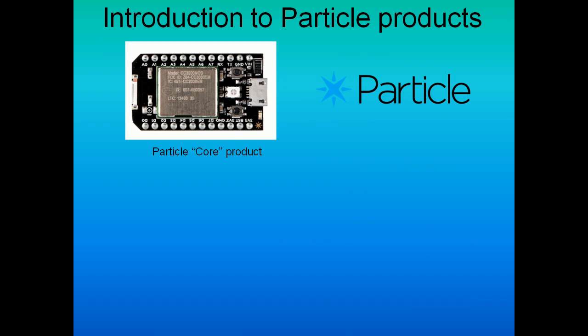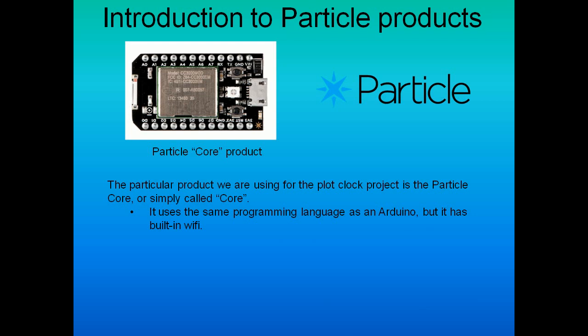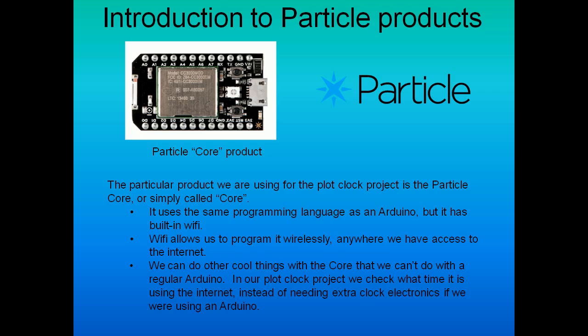The Particle Core is what we're using in the Plot Clock. It's simply called the Core. It has the same programming language as Arduino but has built-in Wi-Fi. The Wi-Fi is great because we don't have to program it with a USB cable — we just send it wirelessly over the internet. Furthermore, it allows for even cooler things: you can interact with Twitter, and you can use a website called If This Then That to send and receive commands to the Core. In our Plot Clock project, the original project called for a timing module — an extra piece of hardware to record the time. The Core already knows what the time is; when it first powers up, it goes out to the internet and finds out the time as part of its regular startup routine, so no need for that extra piece of hardware.